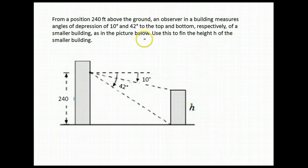Let's take a look at this application problem. From a position 240 feet above the ground, an observer in a building measures angles of depression of 10 degrees and 42 degrees to the top and bottom of a smaller building. Use this to find the height h of the smaller building.